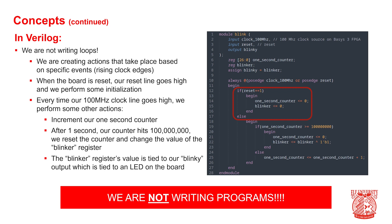Every time our 100 megahertz clock line goes high, we perform other actions. Every time the clock goes high, we increment our one-second counter. When our one-second counter reaches 100 million, we know a second has gone by because our clock runs at 100 megahertz. We then set our counter back to zero to begin counting the next second, and we toggle the blinker value — if it's a one, we set it to zero; if it's a zero, we set it to one. This blinker register's value is tied to our blinky output, which is in turn tied to an LED on the board. This is very, very different from the loop-based concept we saw in our C program.